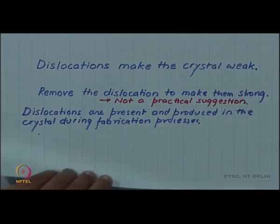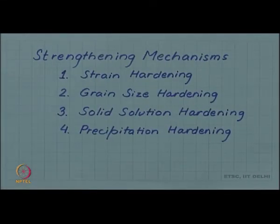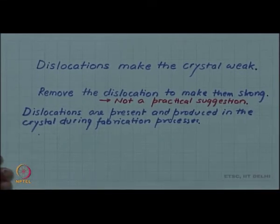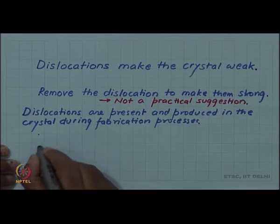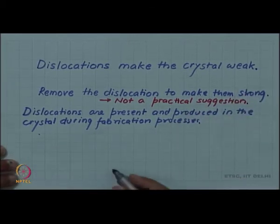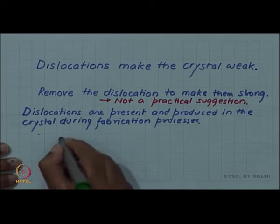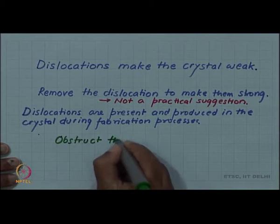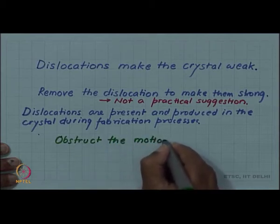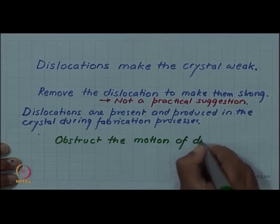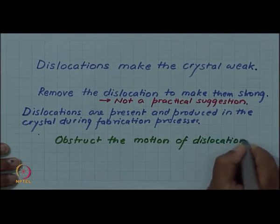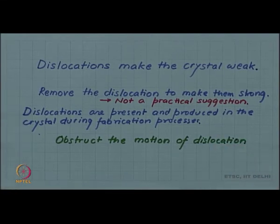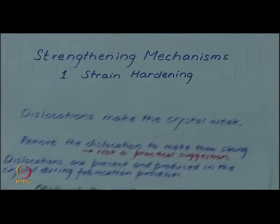So if we have to live with dislocations, how can we make the crystal stronger? The alternative is that plastic deformation happens because of the motion of dislocations. If we can obstruct the motion of dislocations — since we cannot get rid of them — we can put obstacles in their path so that their motion is difficult. If their motion is difficult, plastic deformation will be difficult and the material will be stronger.